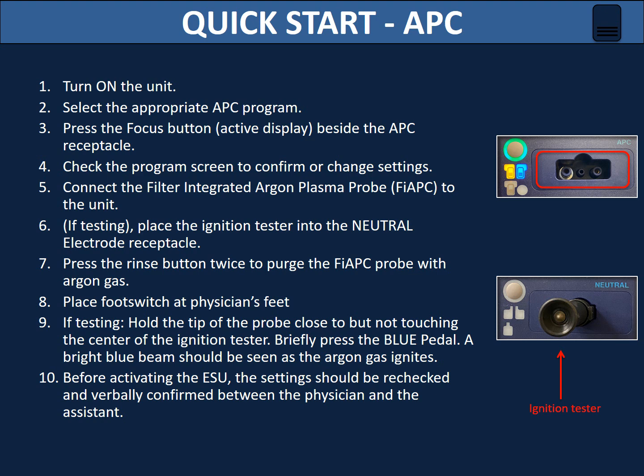For a quick start using argon plasma coagulation: position the machine where you can see it. Turn on the unit. Select the appropriate APC program. Press the focus button beside the APC receptacle. Check the program screen to confirm or change settings. Connect the argon plasma probe to the unit. Place an ignition tester into the neutral electrode receptacle. Press the rinse button twice to purge the probe with argon gas. Position the footswitch well. During testing, hold the tip of the probe close to but not touching the center of the ignition tester, and briefly press the blue pedal. A bright blue beam should be seen as the argon gas ignites. The unit possesses an electronic identifier, which means it automatically detects the device after connection and executes the default setting automatically.